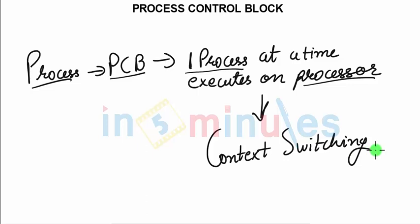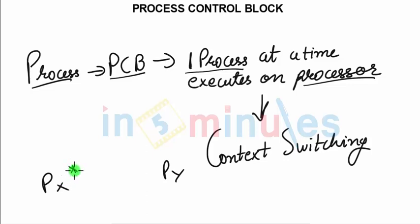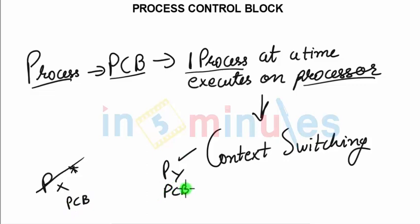What exactly is context switching? Technically, it's a process when two available processes exchange their place in memory. That means process X which was running will unload its data, and process Y which was stopped will now start getting executed. Context switching is a process of unloading the PCB of one process and loading the PCB of the other process.